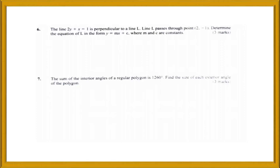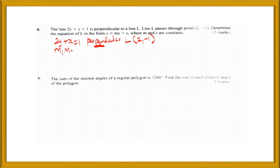Question 6: we have the line 2y plus x equals to 1. This line is perpendicular to a line L, and line L passes through the point (2, -1). When two lines are perpendicular, the product of their gradients — m1 times m2 — equals negative 1. So let's first get the gradient of the line whose equation is 2y plus x equals to 1.